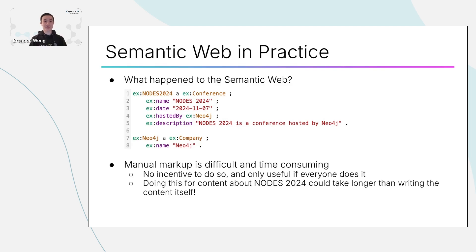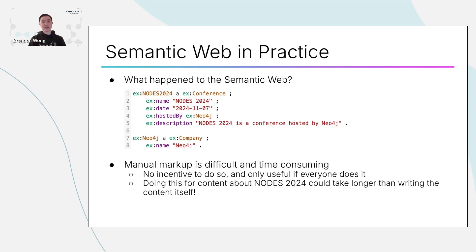The semantic web was envisioned to be Web 3.0, the next generation of the internet. However, it required people to manually mark up websites with structured data. This is an example of Turtle, a markup language similar to Neo4j's Cypher, expressing relationships between entities — for example, here we're saying that Nodes 2024 is hosted by Neo4j. As you can imagine, manually marking up all this information is very difficult and very time consuming. Furthermore, there wasn't really a strong incentive for people to do any of this, and it's only useful if everyone does it. If only 0.01% of the internet actually does this, the amount of knowledge you can extract from that is not very high. Doing this for a blog article could even take longer than the time it took to write the article itself.